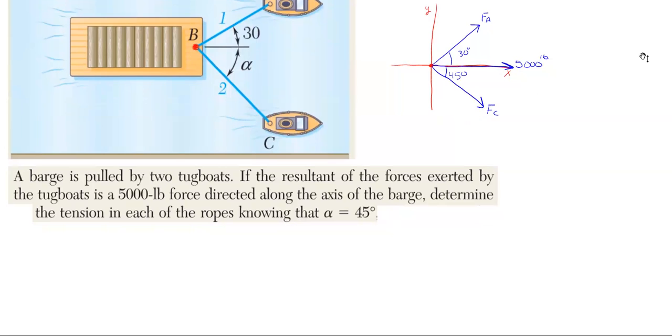What this means is that when you sum forces in the x direction or the y direction, the x direction is going to end up being 5,000 pounds due to the resultant, and then F_y is going to be zero.